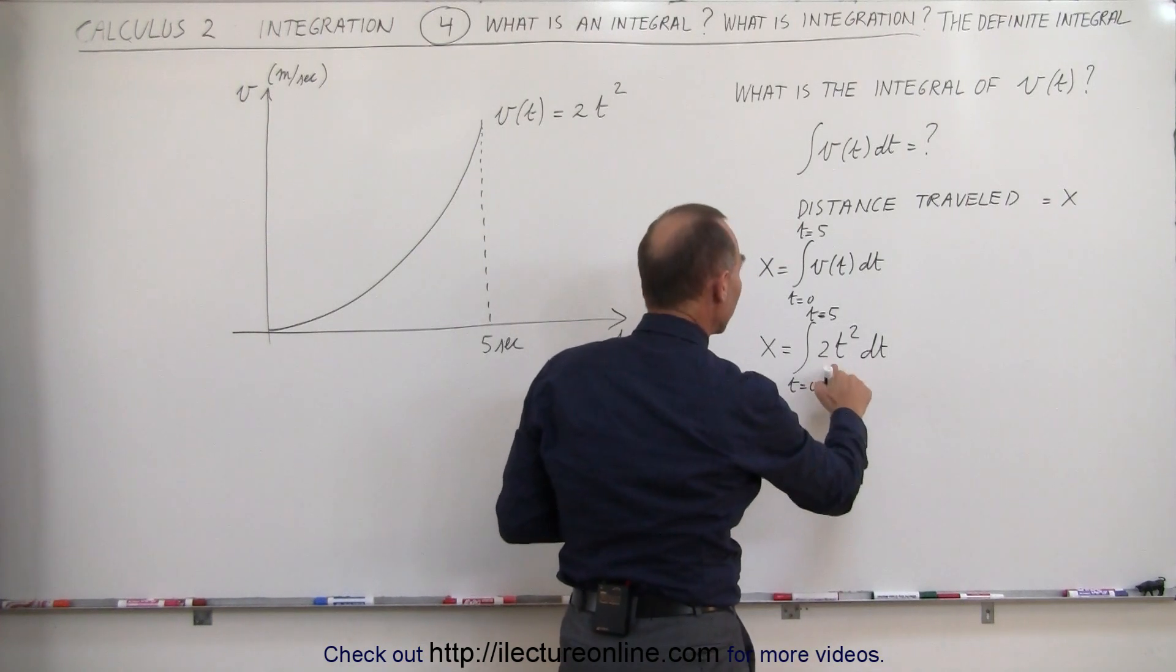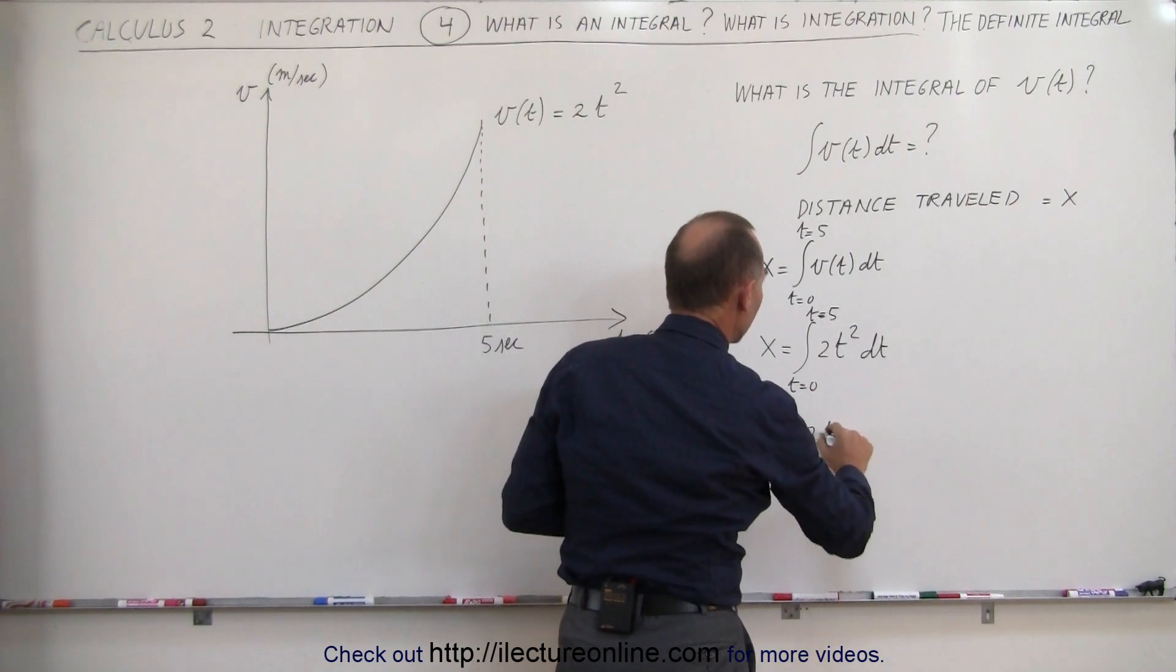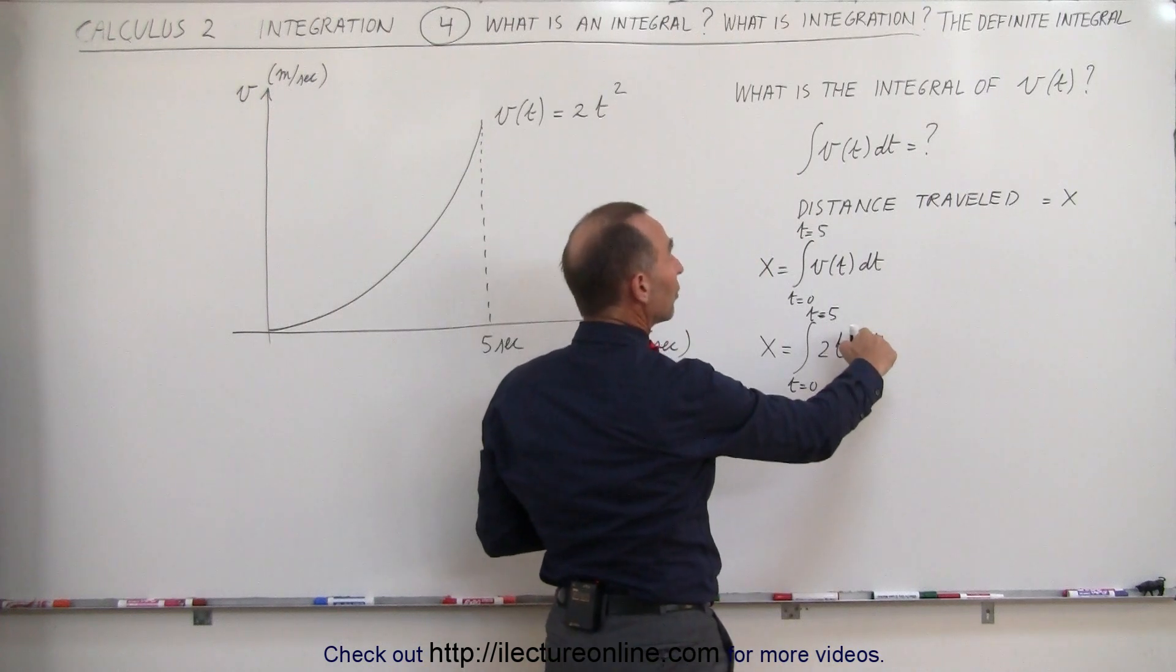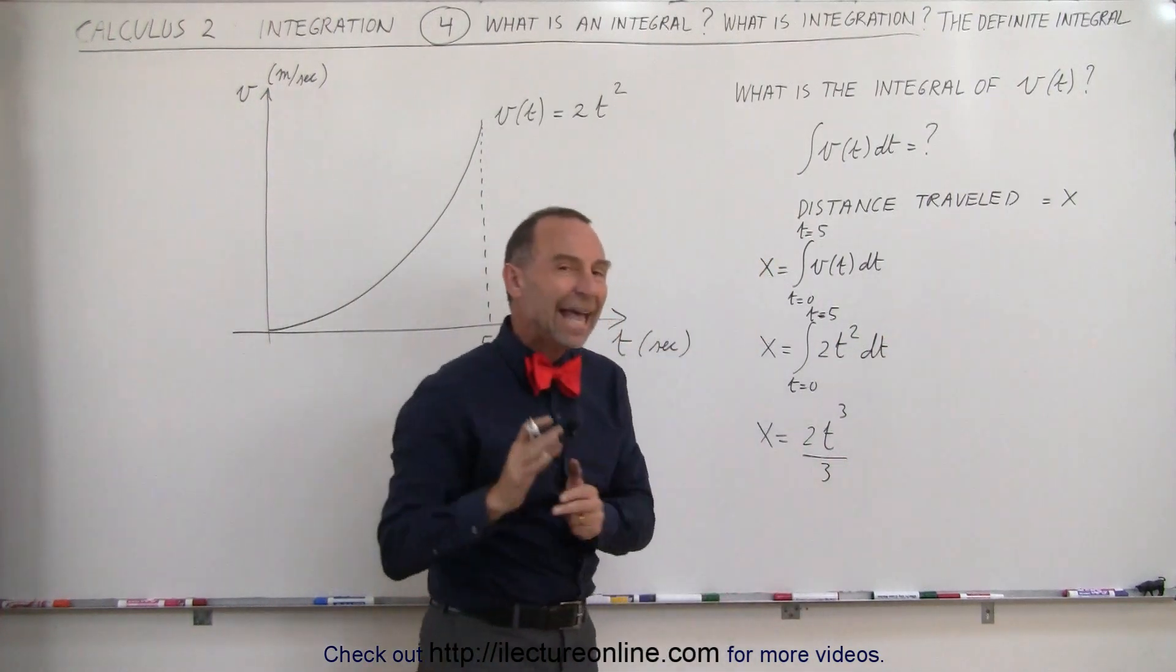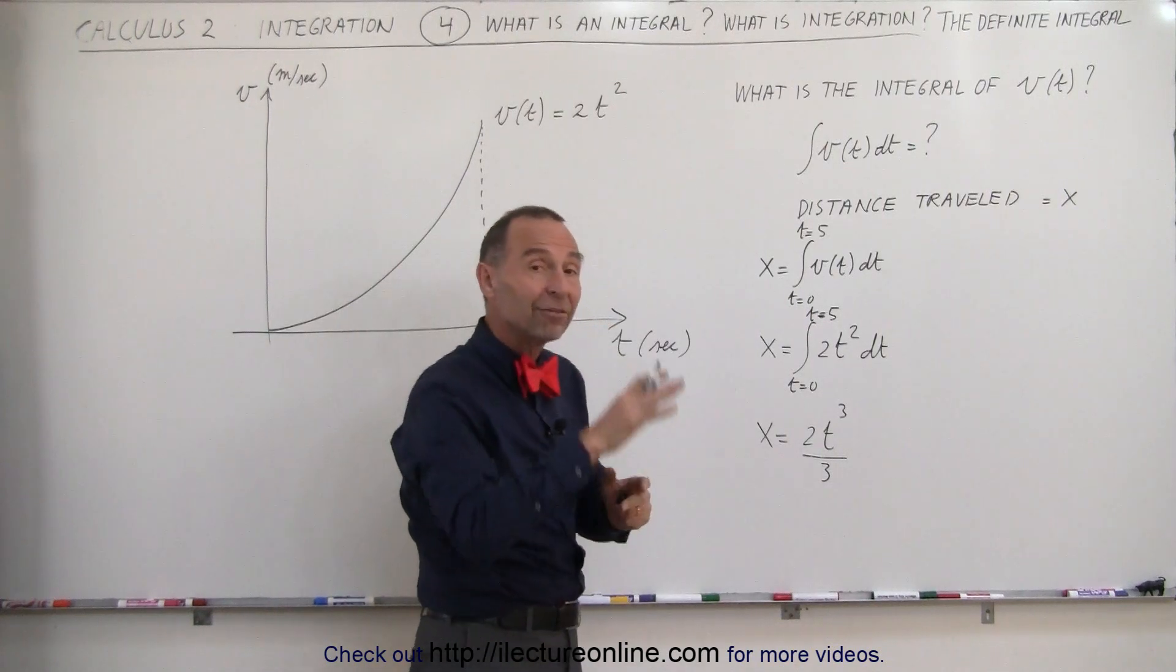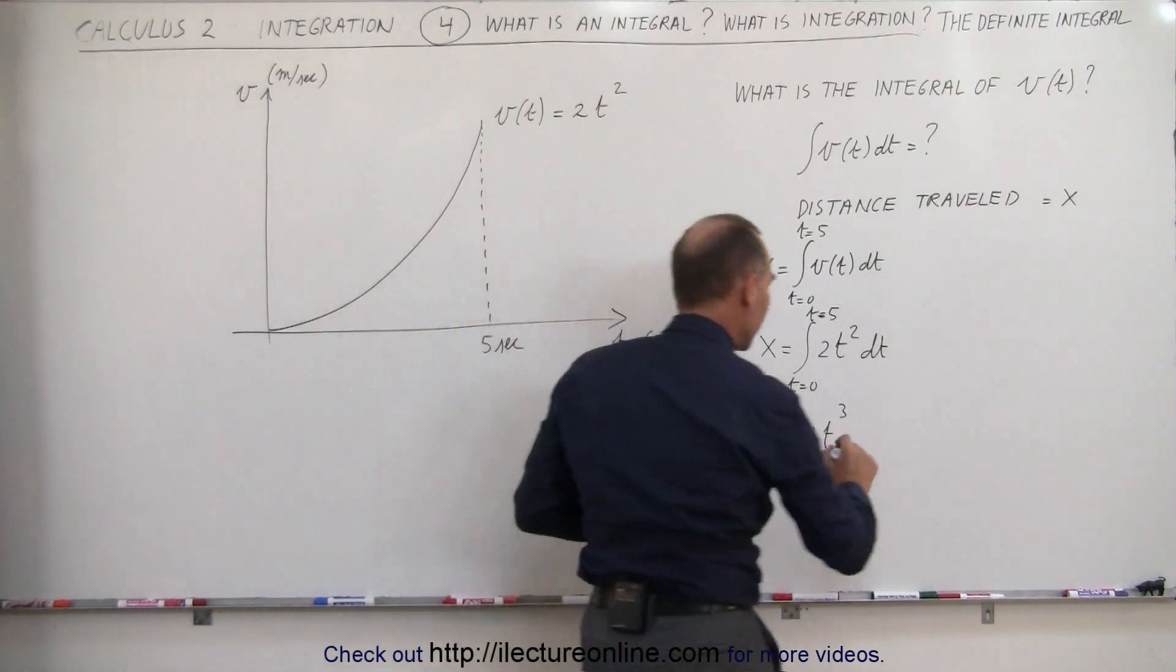x is equal to, when we integrate this, we get 2t to the third power. We add one to the exponent, divide by the new exponent. We do not need to add a constant of integration if we have limits. If it's a definite integral, we don't need to add the plus c.